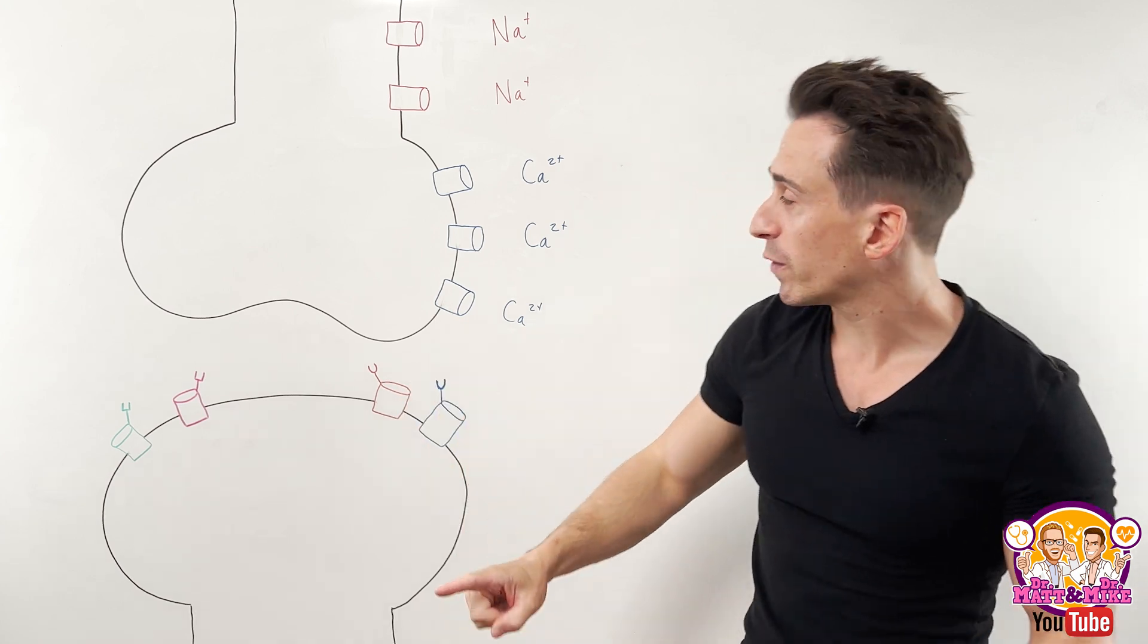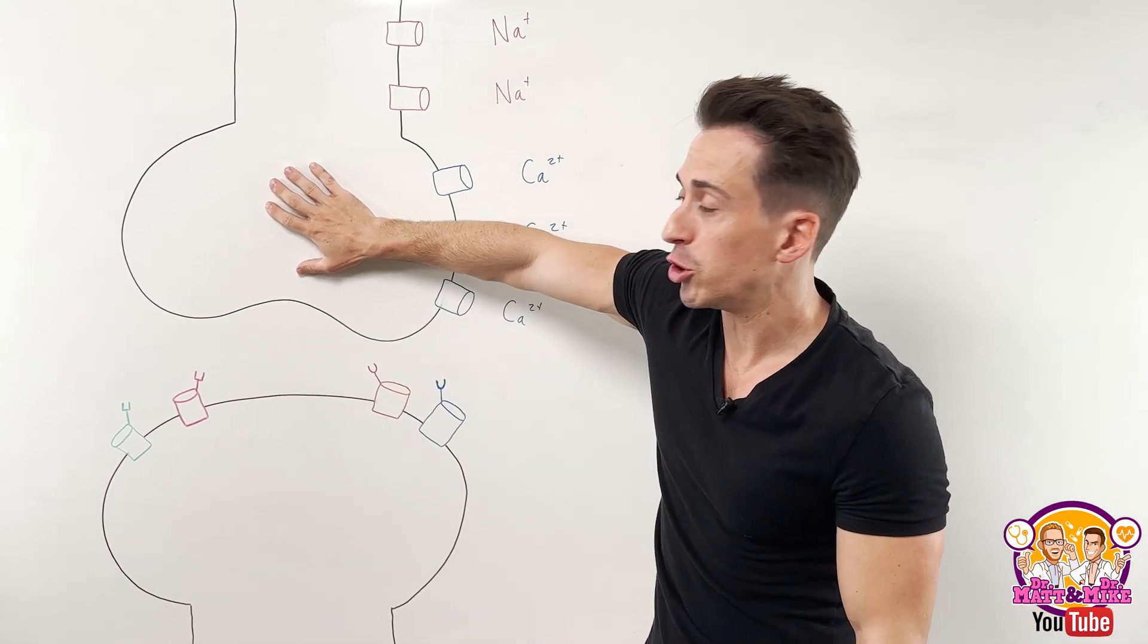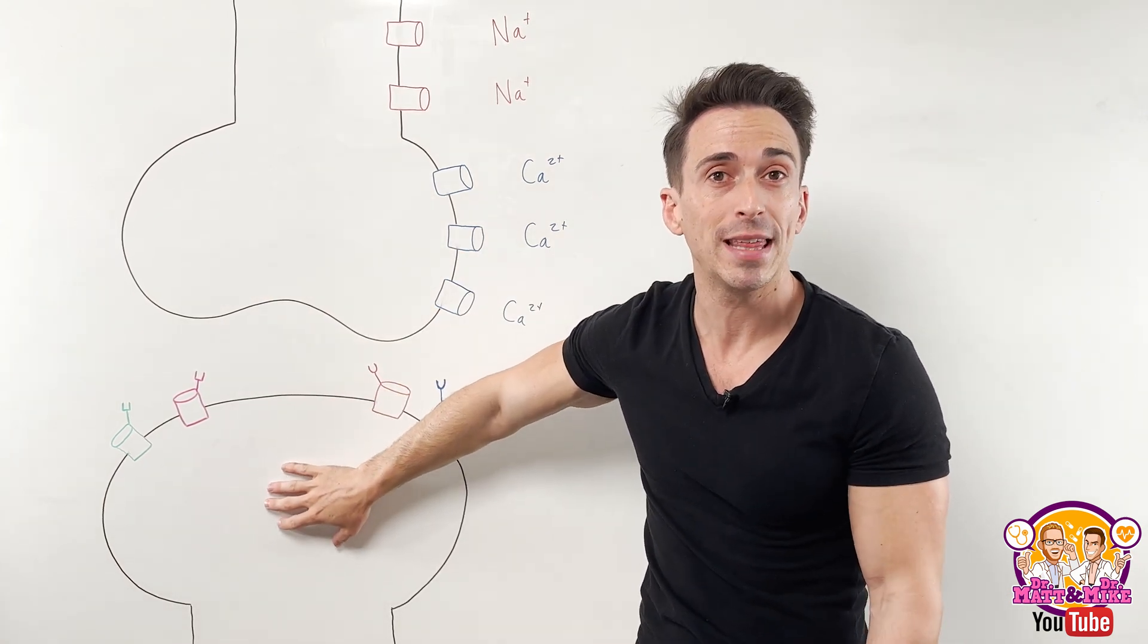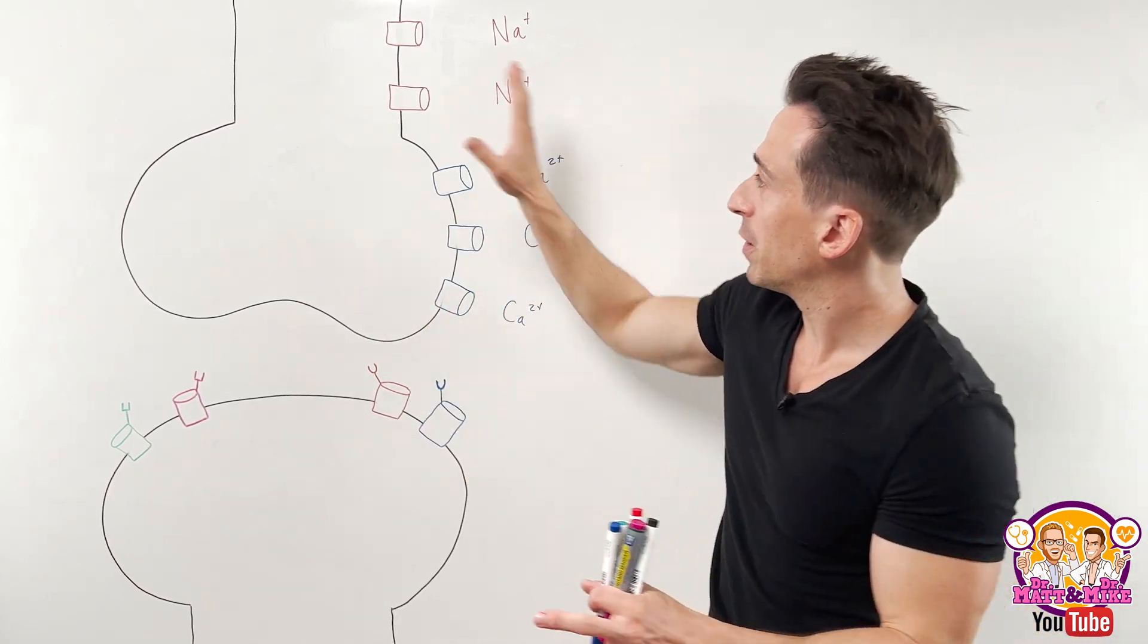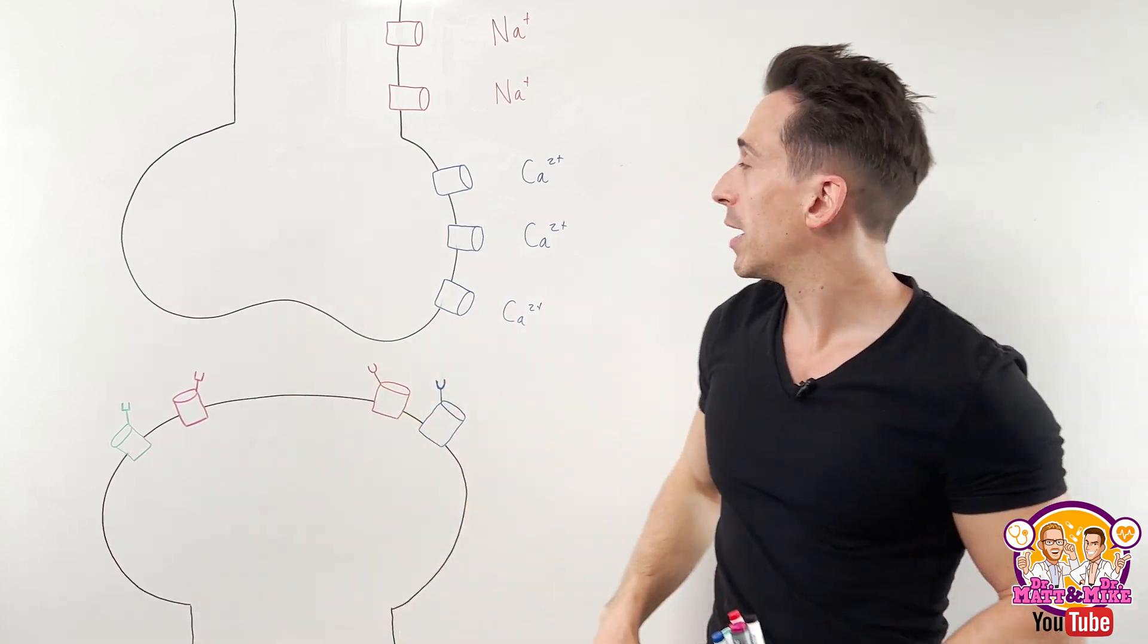Now synaptic transmission is referring to going from part A or point A, being the neuron, crossing this gap to point B or part B, which is going to be that excitable tissue. And so we need to orientate ourselves here. Here's the first neuron, here's whatever that secondary excitable tissue is.